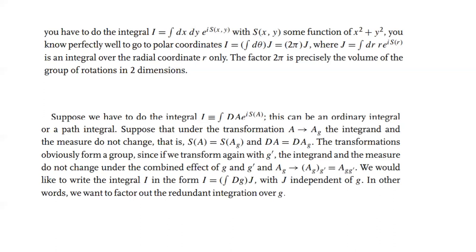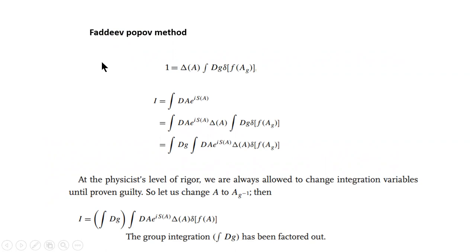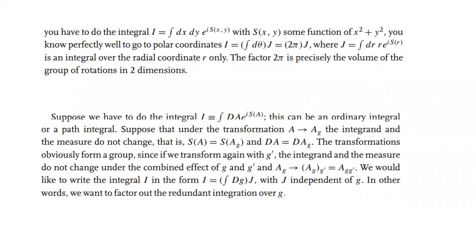A technique was developed by Faddeev and Popov to handle gauge fields in path integral formalism. Consider an integration of e raised to i times some function S of x and y, integrated over dx dy. If we transform to polar coordinates, we can factor out the integration over theta, which just produces a factor of 2 pi. The remaining integration is only over r. Similarly, we will factor out the redundancy from gauge invariance.